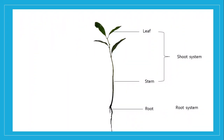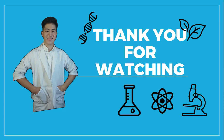To end our discussion: the shoot system is the above-ground part that consists of the leaves and stems and other associated parts like flowers and fruits, while the root system is the underground part of the plant body, which consists of the roots. Stay tuned to this YouTube channel for more science updates. Always remember, science is life, and science for all. Thank you for watching.